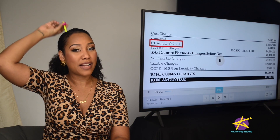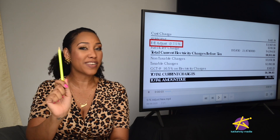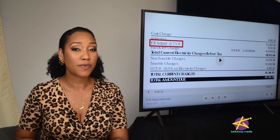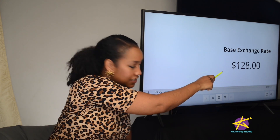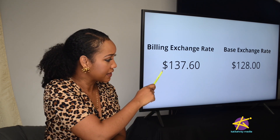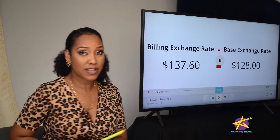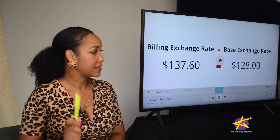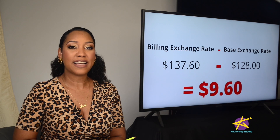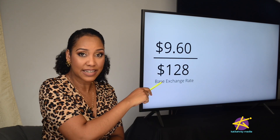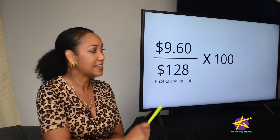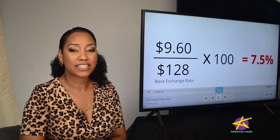Time for a little math class, but don't worry — Teacher K won't make it too hard. Here's how we calculate the Foreign Exchange Adjustment percentage. First, subtract the base exchange rate, which is 128, from the billing exchange rate. Let's say the billing exchange rate for this month is 137.60 — the difference is $9.60. Next, divide that $9.60 by the base exchange rate, then multiply by 100 to get the percentage — that gives us 7.5%.